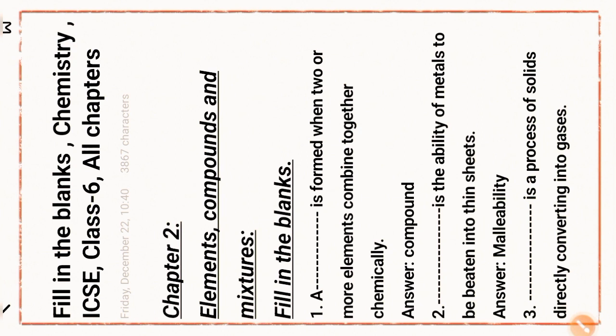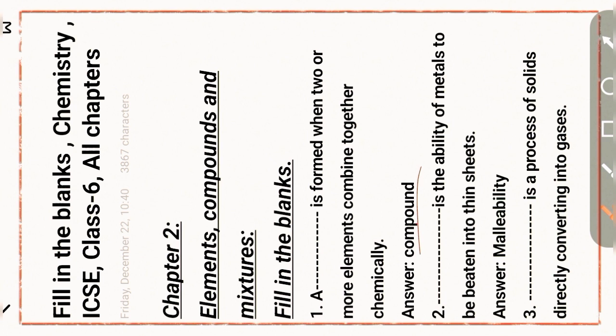Chapter 2: Elements, Compounds and Mixtures. First question: a dash is formed when two or more elements combine together chemically. Answer: compound — a compound is formed when two or more elements combine together chemically. Next question: dash is the ability of metals to be beaten into thin sheets. Answer: malleability.